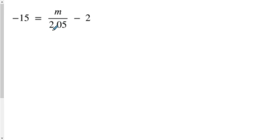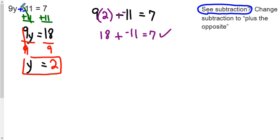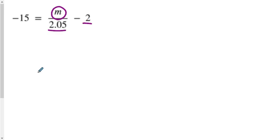First off, we have a decimal right here — also it's got the fraction setup: m divided by 2.05, just to give you a bit more experience. Then we have a subtraction sign here, so we want to handle that the same way we did problem number two: make that subtraction into add the opposite. The last reason is that this is the first time where the variable is on the right side of the equal sign. Remember, the equal sign is like the halfway point. We need to focus on this m and get rid of the numbers on the same side of the equal sign with it.